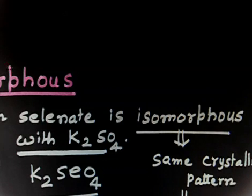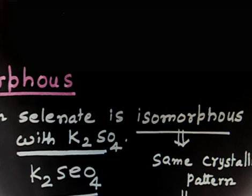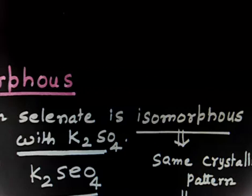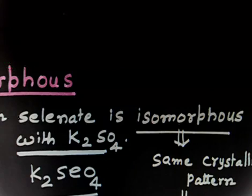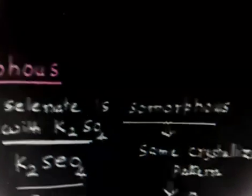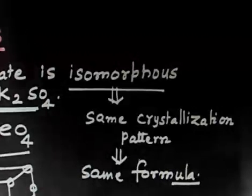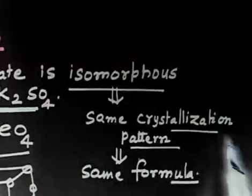Only the identity of atoms can differ: in place of one compound you have one type of atom, and in the other compound you have different atoms. So if A and B are isomorphous, they will have the same location of atoms, but the identity of the atom can change. Isomorphous compounds will have the same crystalline pattern.